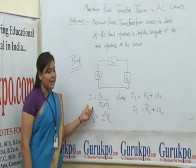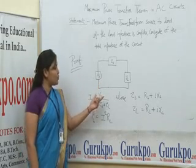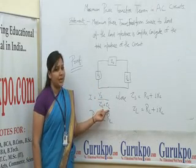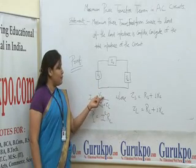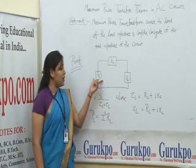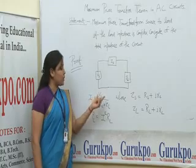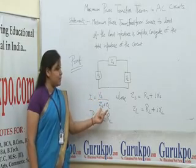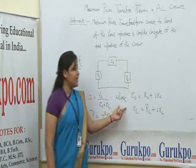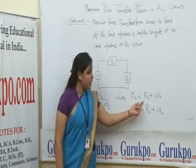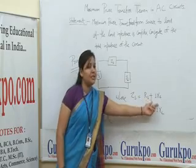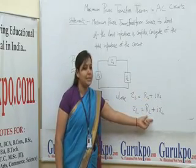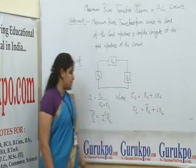So, obviously current I is equal to Vs upon (Zs + Zl), where Vs is the total voltage. So I equals total voltage upon total impedance, where Zs can be written as Rs + jXs and Zl can also be written as Rl + jXl.